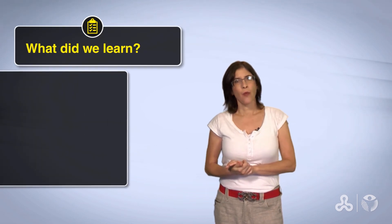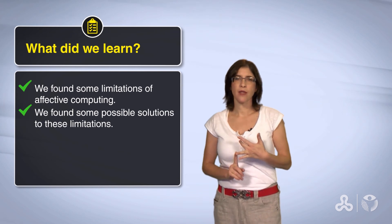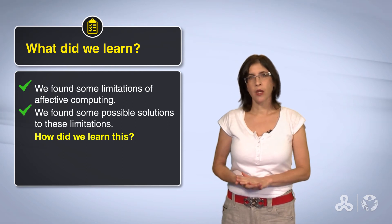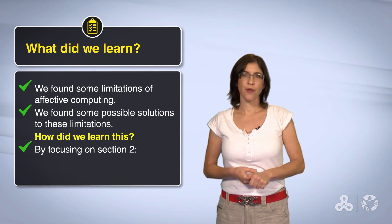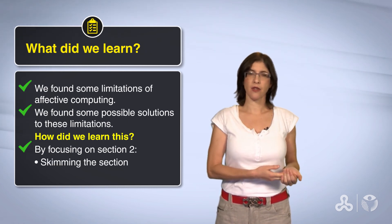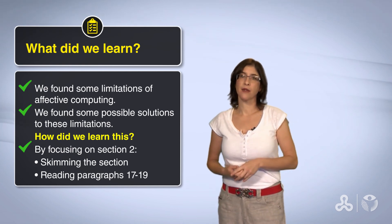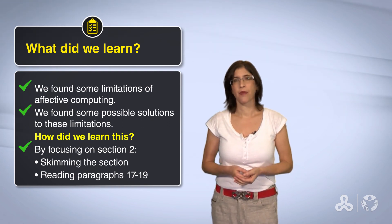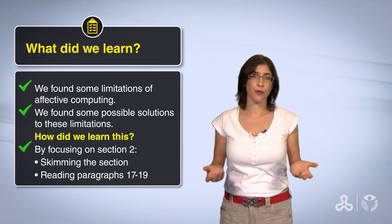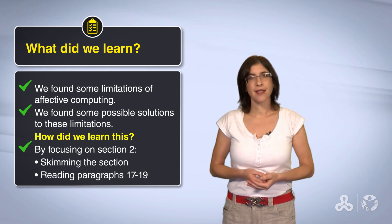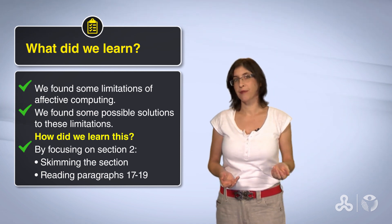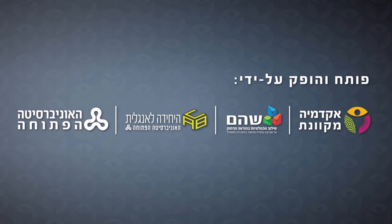We are ending our lesson now — we did a lot! What did we learn? We found some limitations of effective computing, and we also found some possible solutions to these limitations. We learned this by focusing on section 2: we first did some skimming to locate the answers, then focused on reading paragraphs 17 through 19. Effective computing is a new technology and there is still much more to do and to improve. Who knows what the future holds? In the next lesson, we will sum up what we learned in this unit about effective computing. We'll see you next time. Bye.